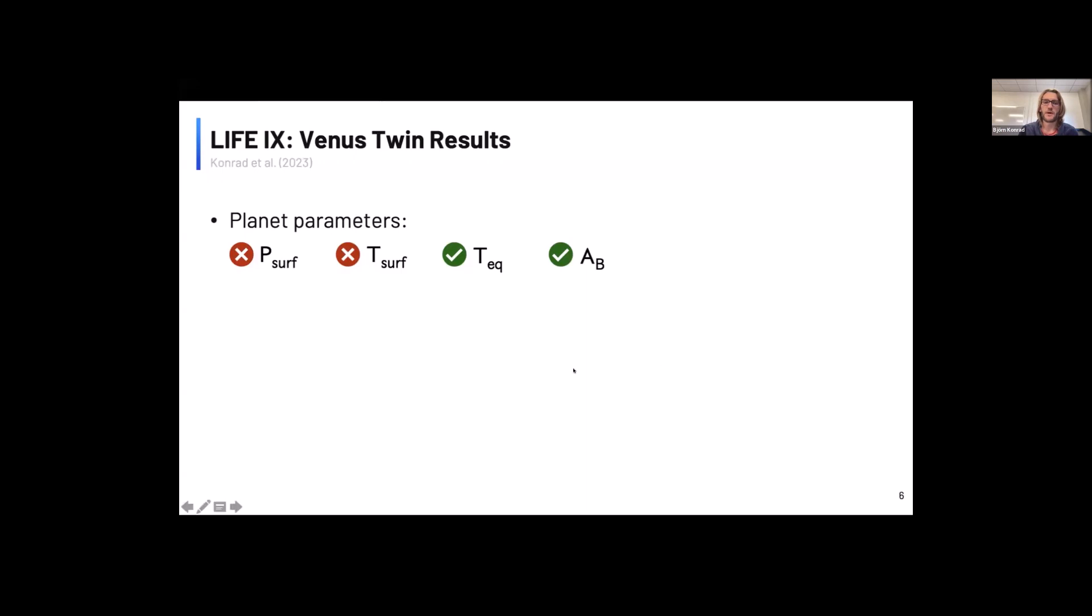However, what we managed to find very good constraints on for Venus is the equilibrium temperature of the planet and the bond albedo. But this is not really a surprise because we are directly measuring the thermal emission of the planet.